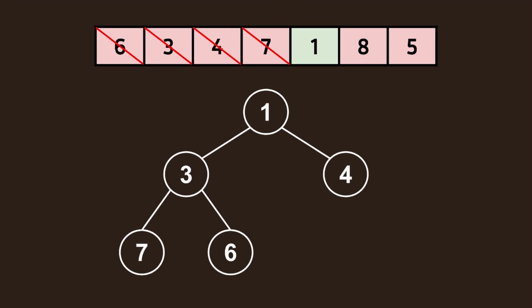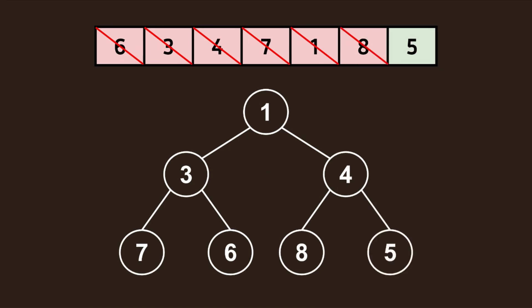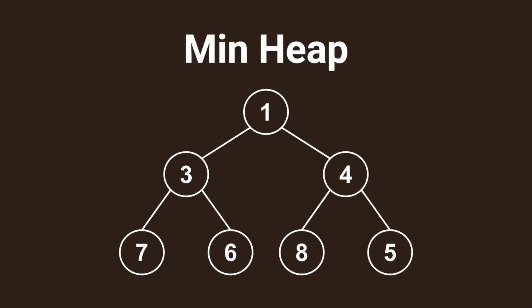It seems like we've got the hang of it, so I'll go through the next two iterations. Finally, we're done creating the min heap. Note that the value at the root will always be the minimum of the array.